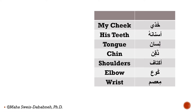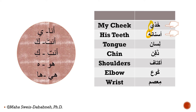Now I'm demonstrating with five pronouns. 'Khaddi' (my cheek) and 'asnanu' (his teeth) are examples. Now it's your turn — continue with all five pronouns and play with them.